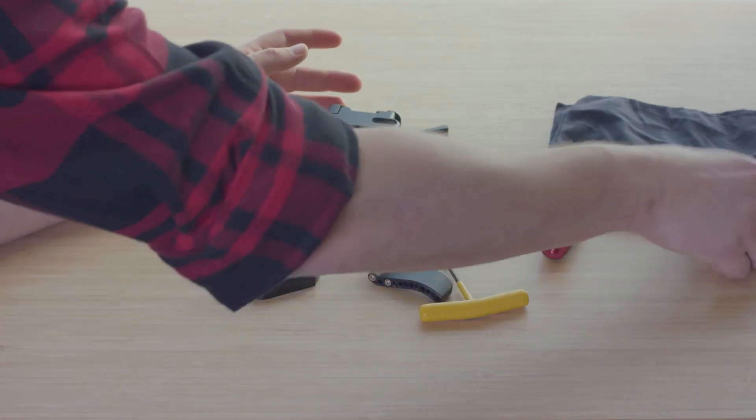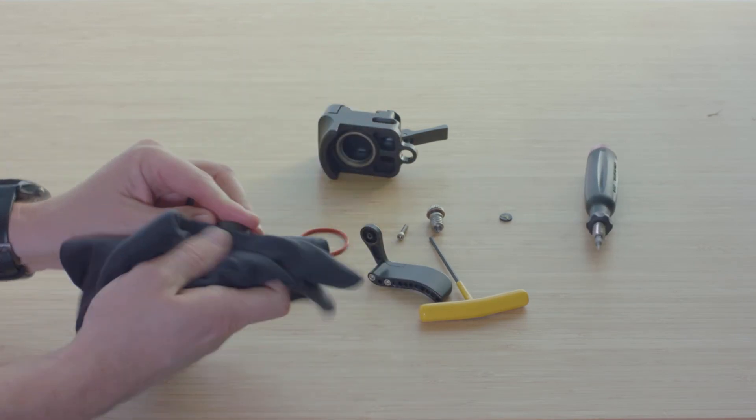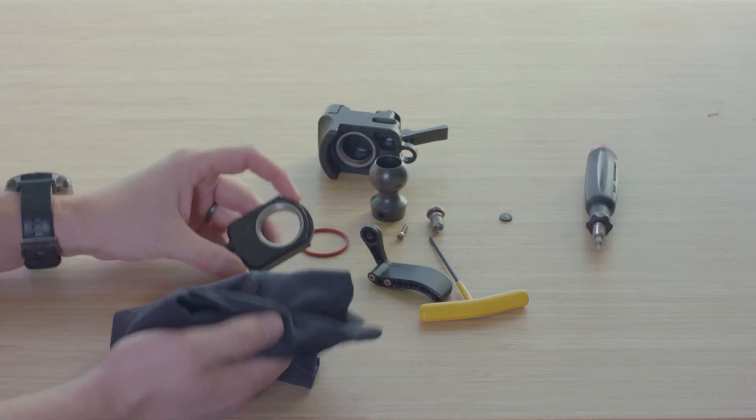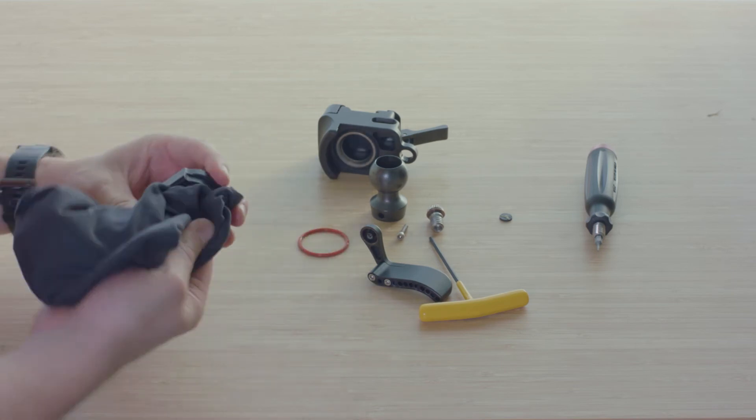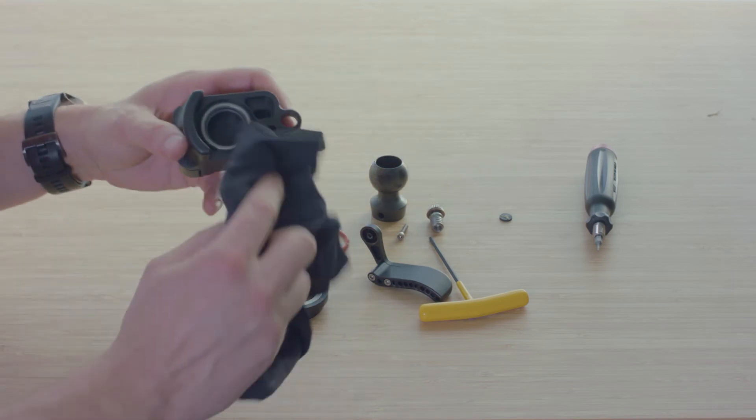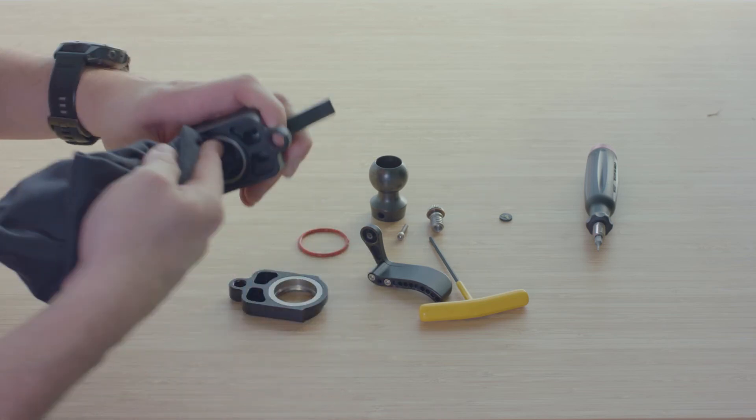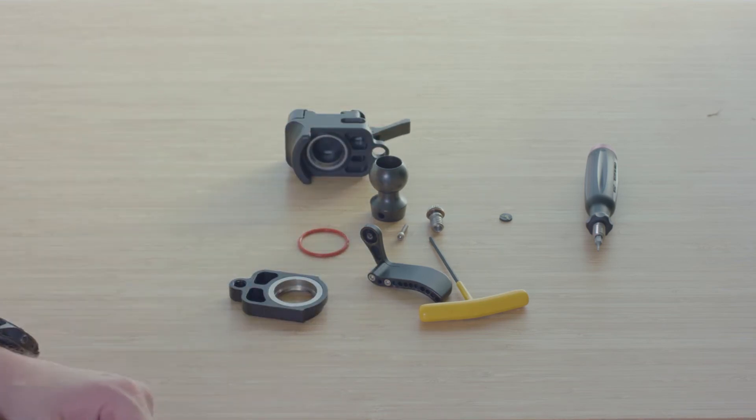To clean it, you'll just take your rag, clean off the head, clean off the rings, this area, the ring and inside the body, and the screw.